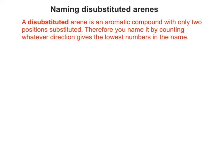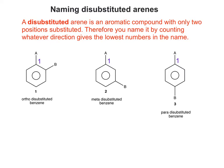A disubstituted arene is an aromatic compound with only two positions substituted, and you name it by counting in whatever direction gives the lowest numbers. Applying the idea that your first substituent, let's call it substituent A, is at carbon number 1 - why don't you sketch examples 2 and 3, the meta and para disubstituted benzenes, with the correct carbon numbering? Pause the clip and try this now.